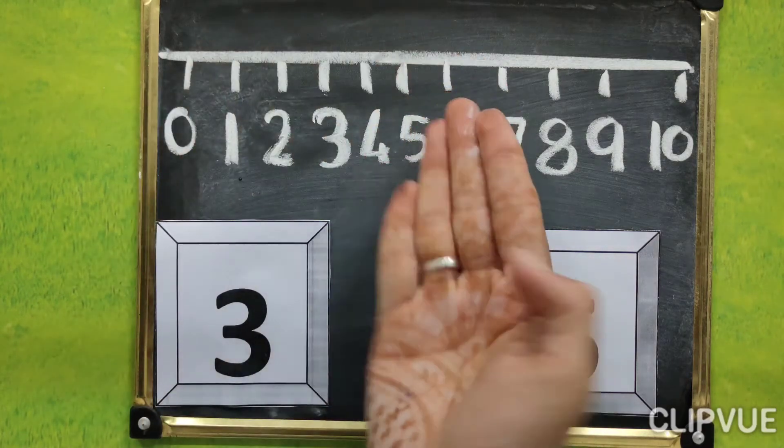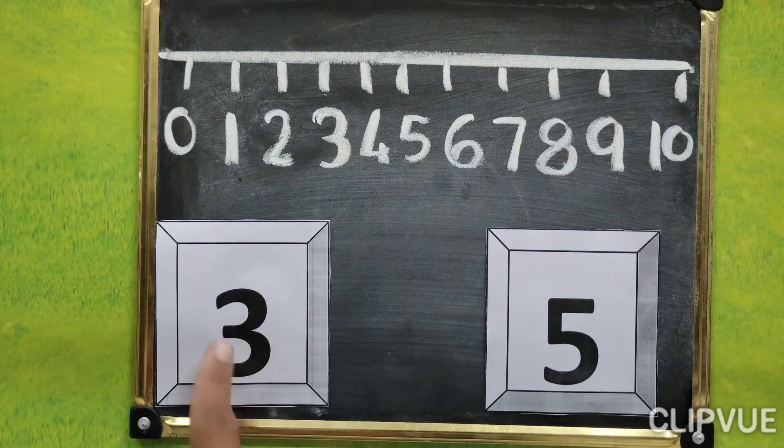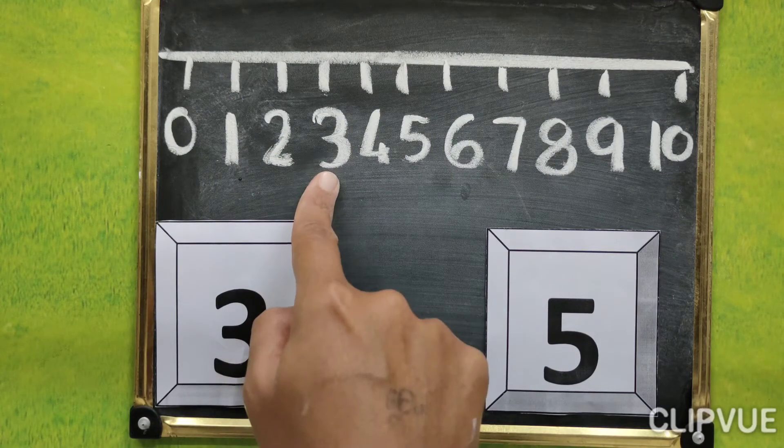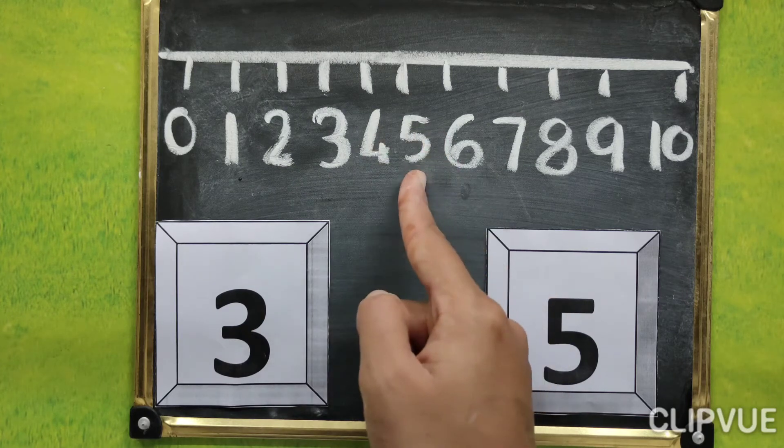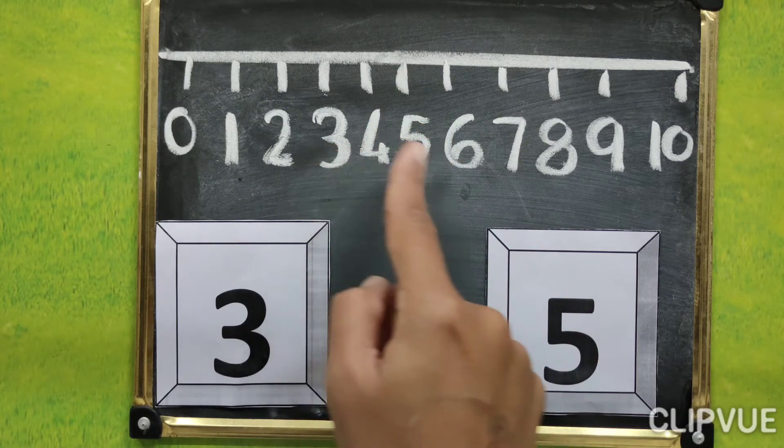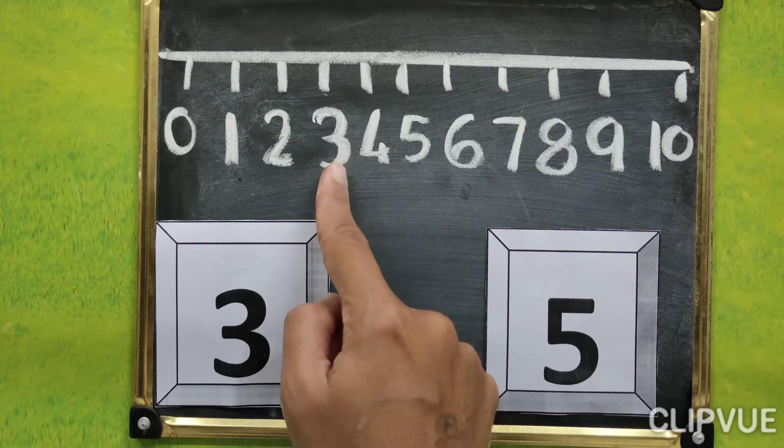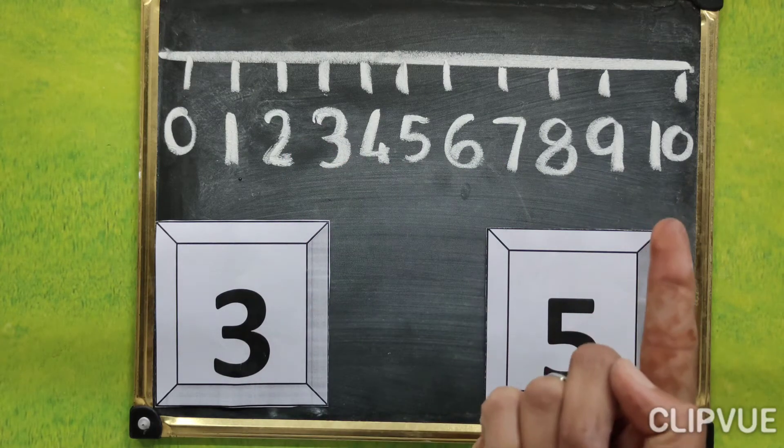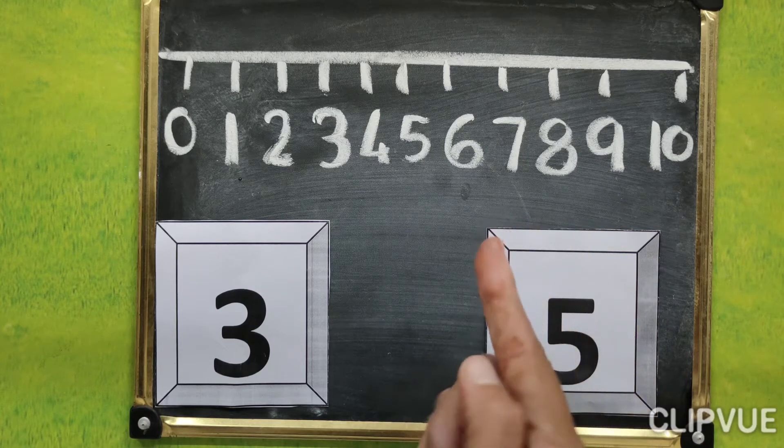Jo number after aata hai. Look at here. Which number is this? 3. So 3 after 4 and 5. So 5 is big number. Q5 big number hai? Q3 ke baad aata hai. Jo number baad mein aata hai, usko hum kya kahenge? Big number.